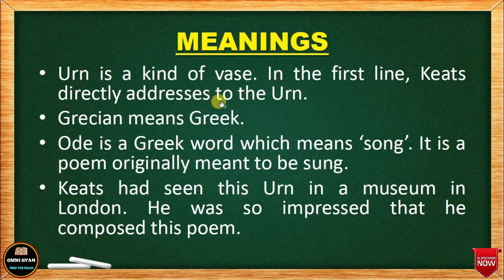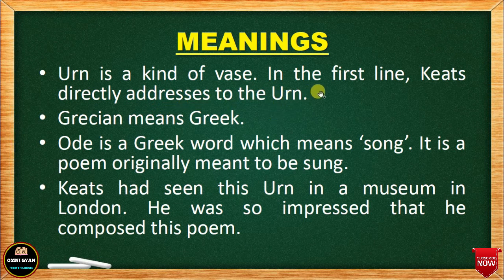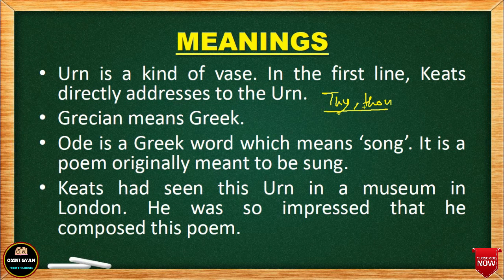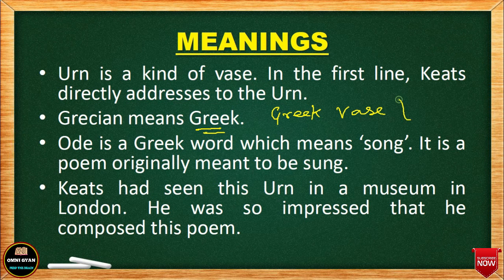Now let us come to some meanings. What is the meaning of 'urn'? What is the meaning of 'Grecian'? An urn is a kind of vase — like a flower vase. In the first line, Keats directly addresses the urn. Throughout the poem, time to time, the poet is directly talking to the urn, addressing it using old English words like 'thee' (you), 'thy' (your). 'Grecian' means Greek — so a Grecian urn means a Greek flower vase.